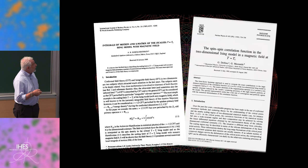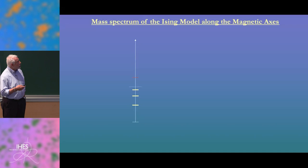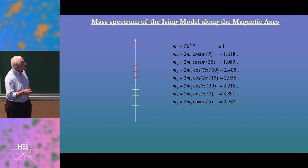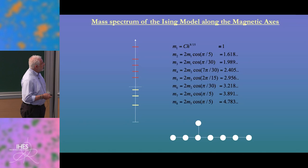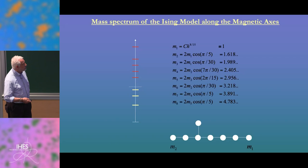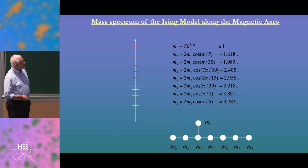This program for the Ising model in a magnetic field was carried out in a paper with Gesualdo Delfino. The scattering theory predicts eight masses with precise and exact mass ratios that can be associated uniquely to the Cartan matrices of E8, with an association that has a very suggestive probabilistic interpretation: the lowest mass is associated to the lowest node reachable by Brownian motion, the second mass to the second node, and so on.